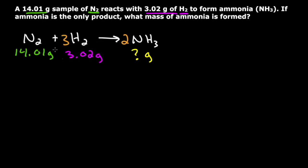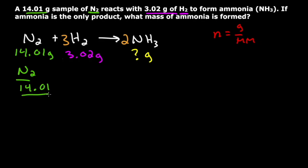The way we figure out the limiting reactant is we see which one of these can produce the least amount of NH3 — that's going to be the limiting reactant, and it will determine what actually ends up being made. So I'm going to do this problem basically twice. Starting with N2: I have 14.01 grams, and I have to convert this to moles. Moles equals mass in grams divided by molar mass. The molar mass of N2 is 28, so 14.01 divided by 28 gives me 0.5 moles of N2.